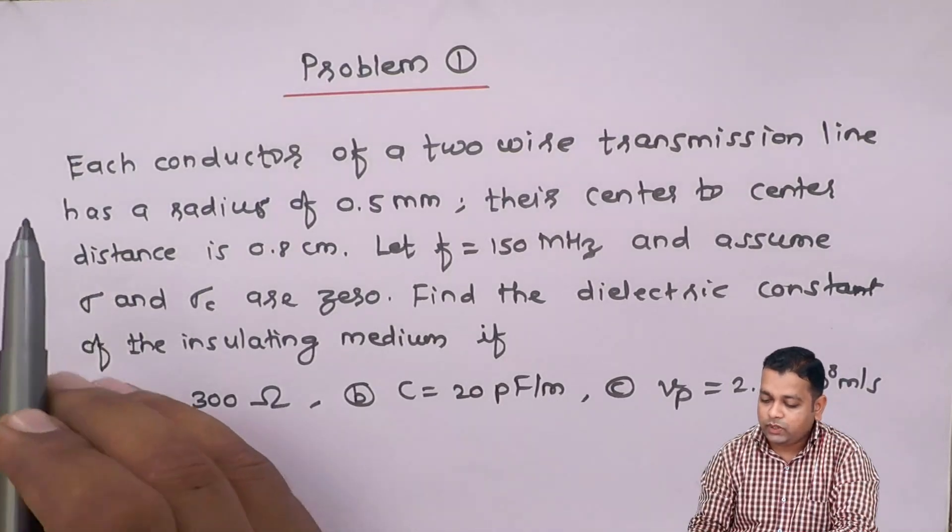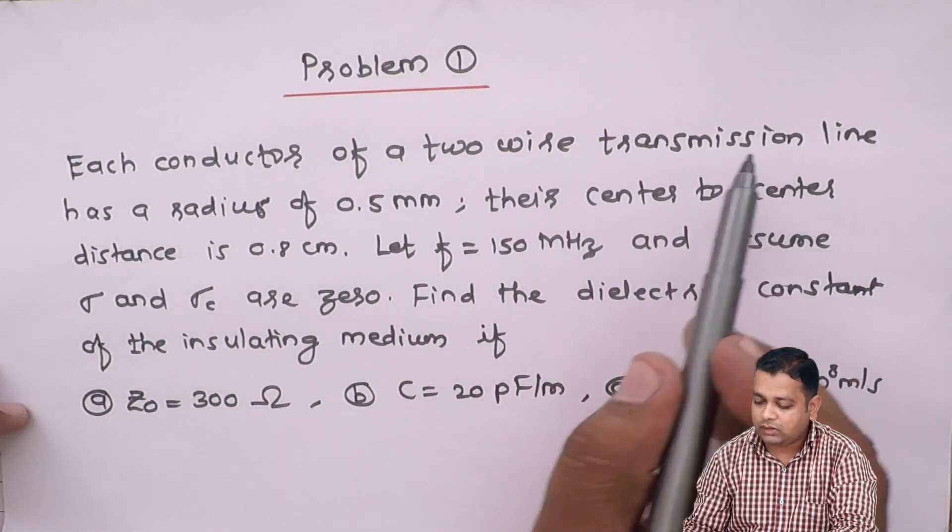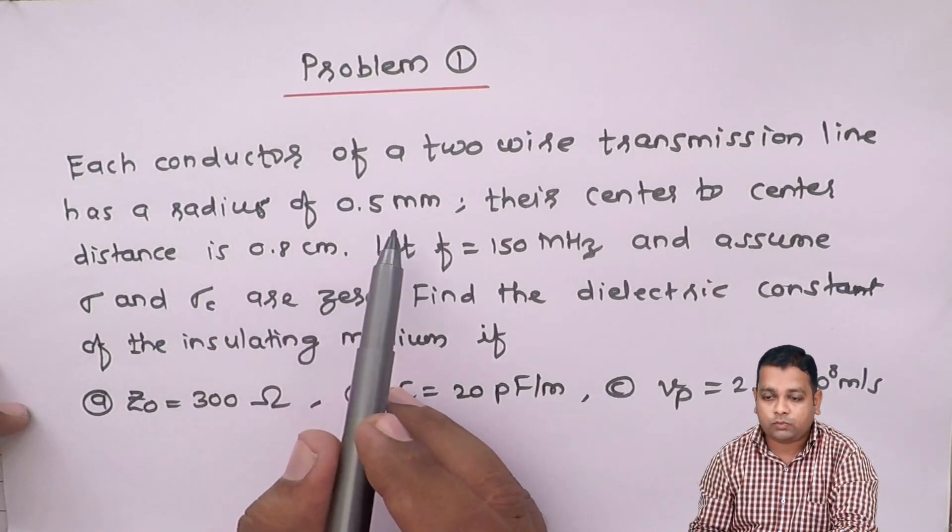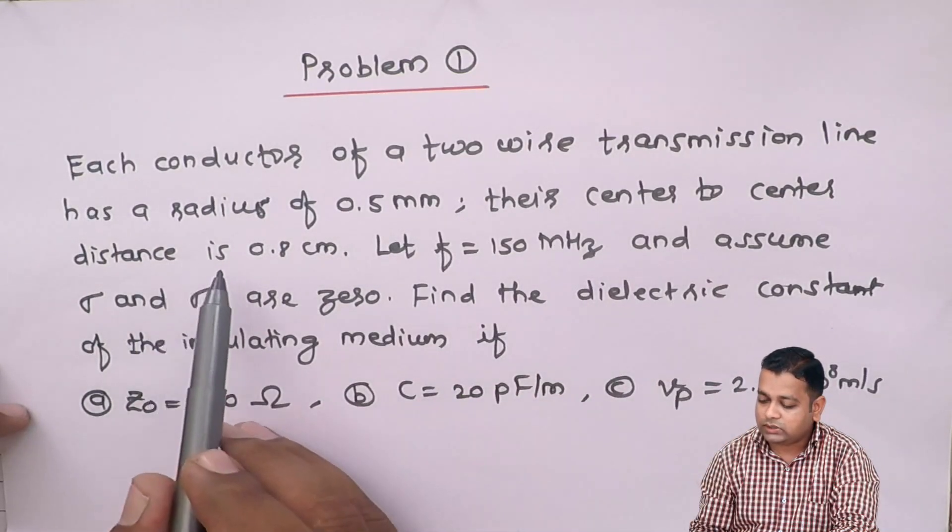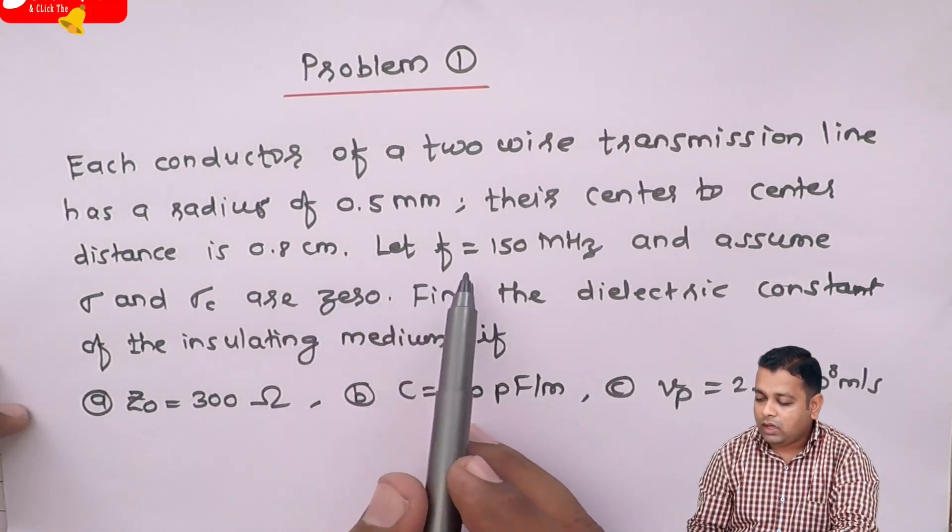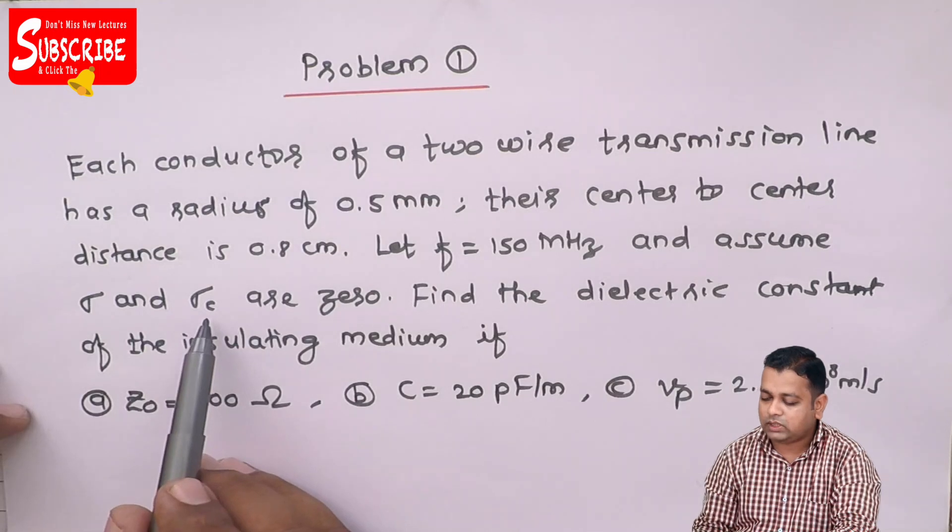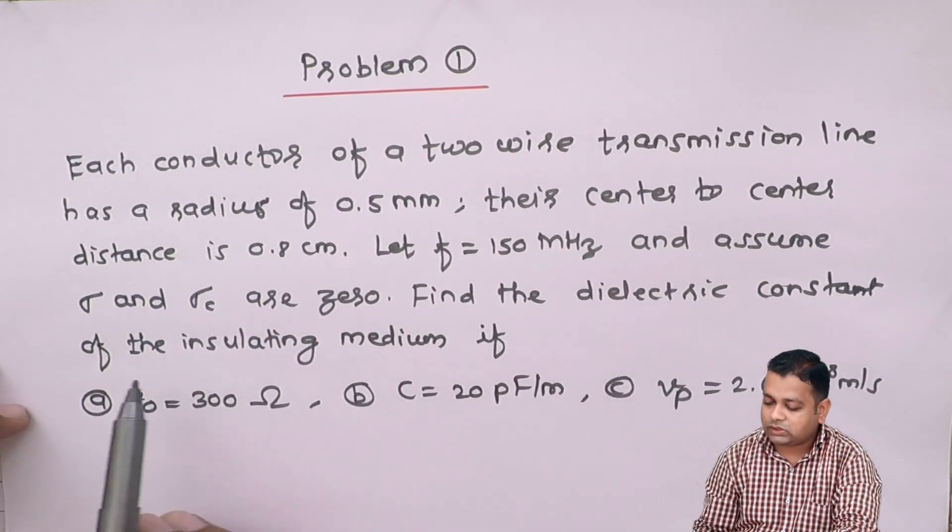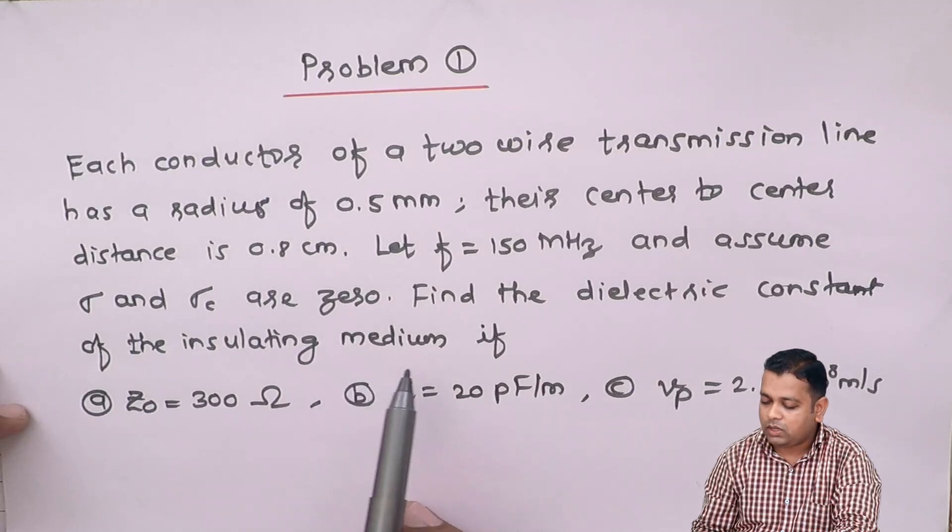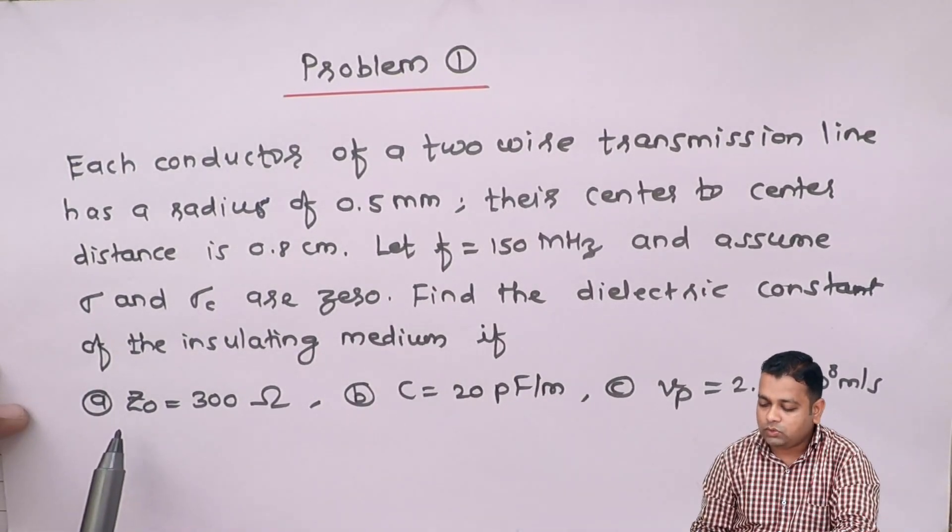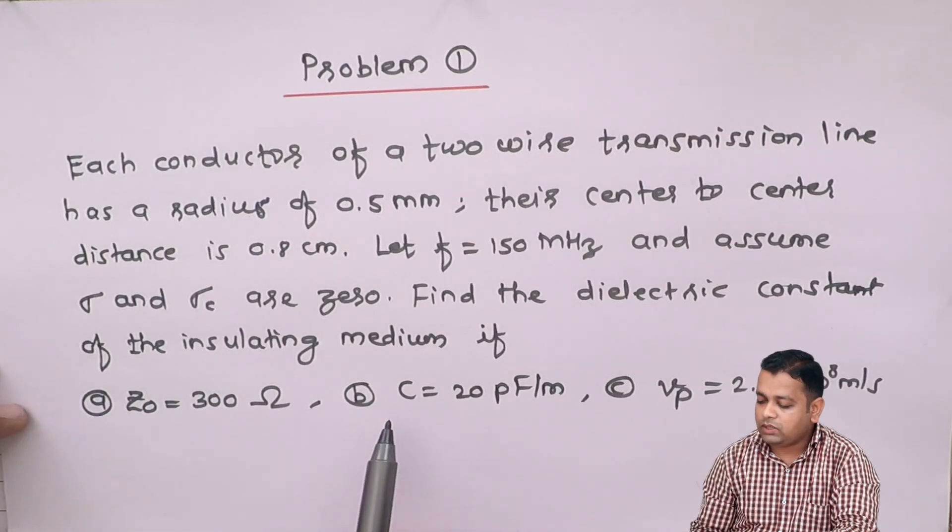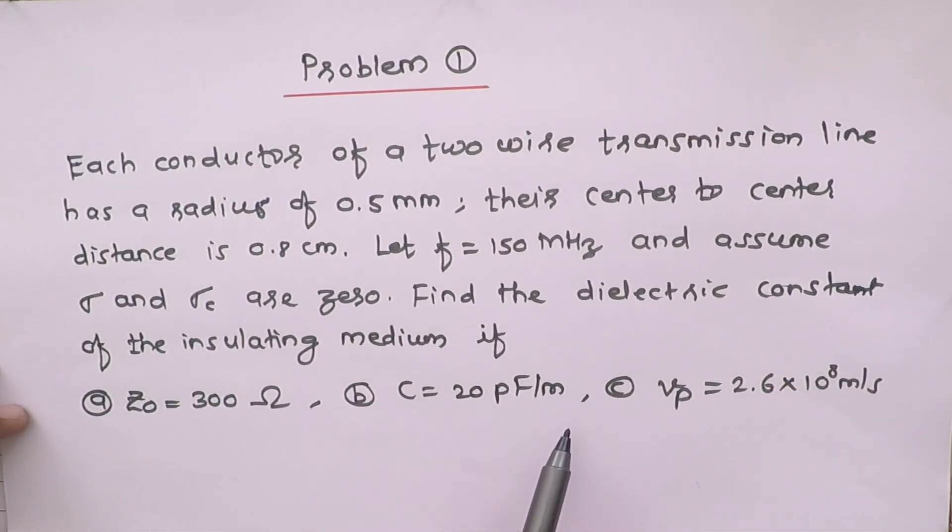Here we have this problem statement. Each conductor of a two-wire transmission line has a radius of 0.5 millimeters. Their center-to-center distance is 0.8 centimeters. Let f equals 150 megahertz and assume sigma and sigma_c are zero. Find the dielectric constant of the insulating medium if: part a, Z0 equals 300 ohms; part b, capacitance is given as 20 picofarad per meter; and part c, vp equals 2.6 times 10^8 meter per second.